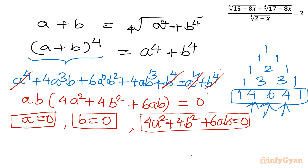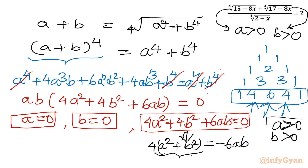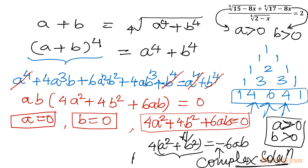You can check that a and b are both always positive, since they are 4th roots giving real solutions. So for the third equation, rearranging gives 4a² plus 4b² equals minus 6ab. The sum of two positive squares cannot equal a negative value, so this generates only complex solutions. We reject the third equation. Only the equations a equals 0 and b equals 0 remain.